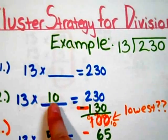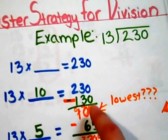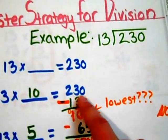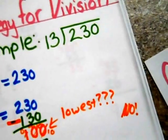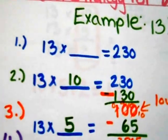Using landmark numbers, I choose 10. 13 times 10 is 130. 130 from 230 is 100. Is that the lowest? No. Repeat.